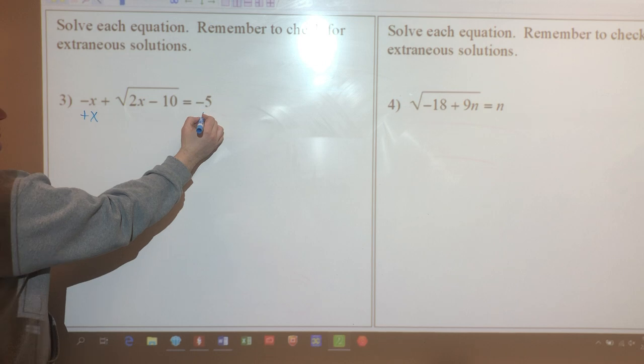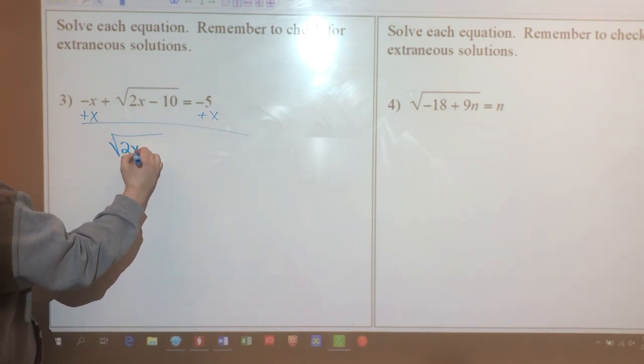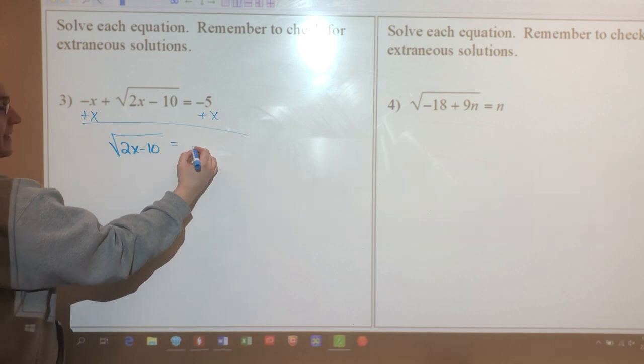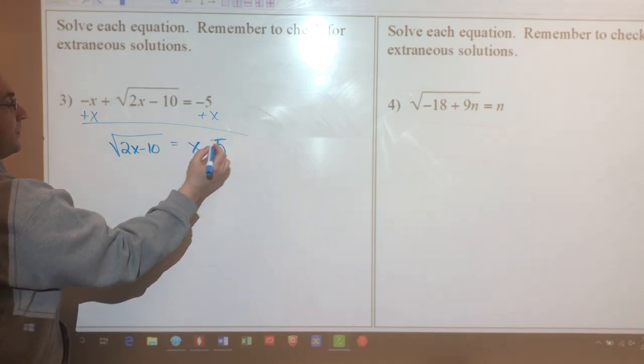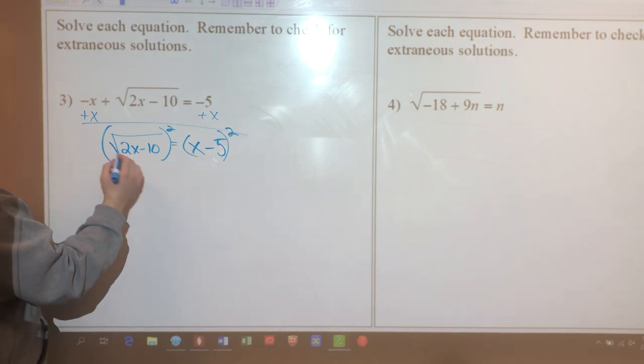Now when I do that, I'm going to be left with square root of 2x minus 10, and that's going to equal x minus 5. I'm square rooting both sides - I'm sorry, I'm squaring both sides, which is going to get rid of the square root sign.